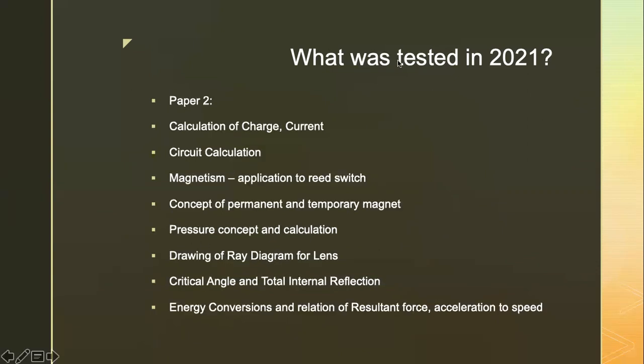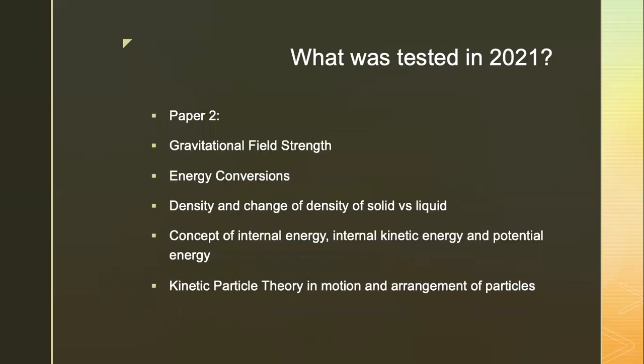I have another document that summarizes the important definitions and equations. One of them is the equation that relates wavelength, frequency and speed, which was heavily tested in last year's paper. And of course, the concept of wave and sound, calculation of charge and current. Circuit calculation definitely will be tested every year without fail. Magnetism, and this time around, they applied it to reed switch. Concept of permanent and temporary magnetic material versus soft magnetic material, how is it applicable to reed switch? Pressure concept and its calculation, drawing of ray diagram for lenses, critical angle and total internal reflection, energy conversions, gravitational field strength again, density and change of density solid versus liquid, concept of internal energy, kinetic particle theory in motion and arrangement of particles was also tested.